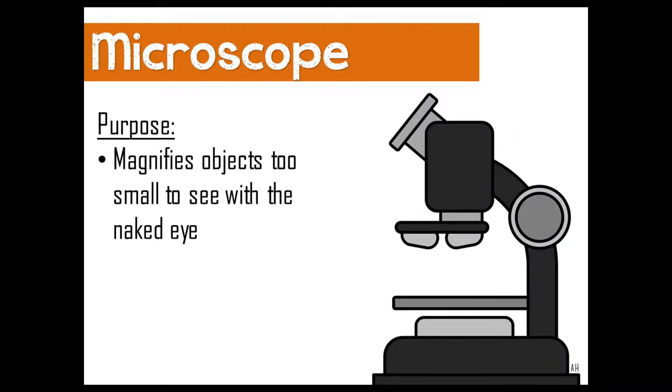The microscope is something that will be used in the forensics classroom. There will be a future lesson over the microscope where we go more in depth over the different parts, function, and how to care for and magnify objects with the microscope. For right now, you just need to know that the purpose of the microscope is to magnify objects that are too small to be seen with the naked eye.